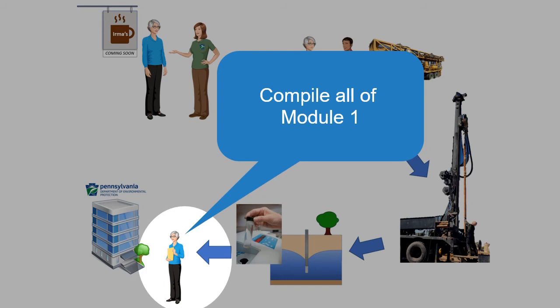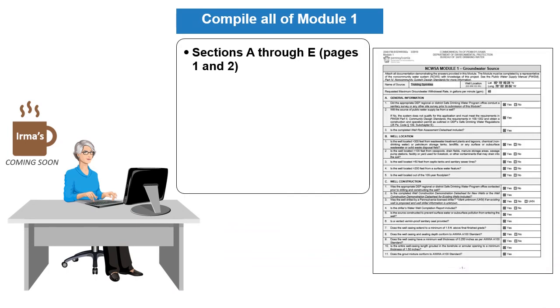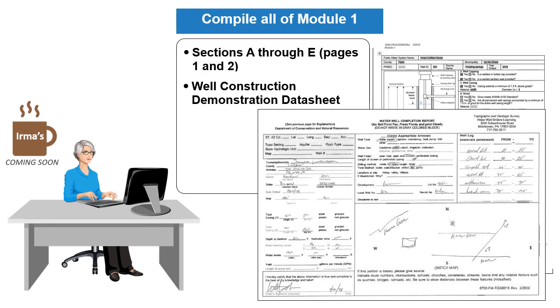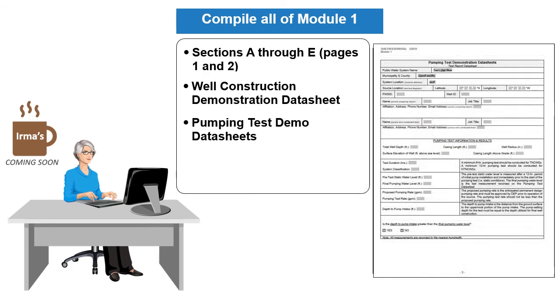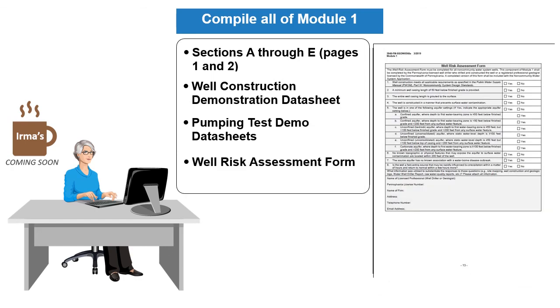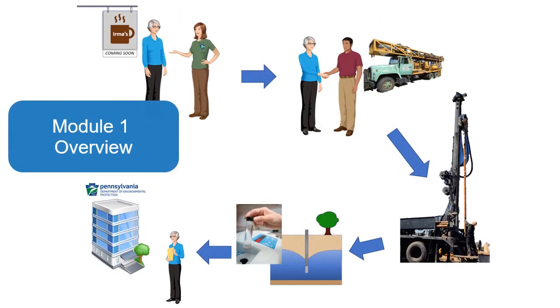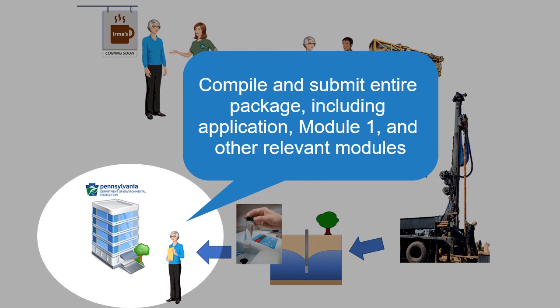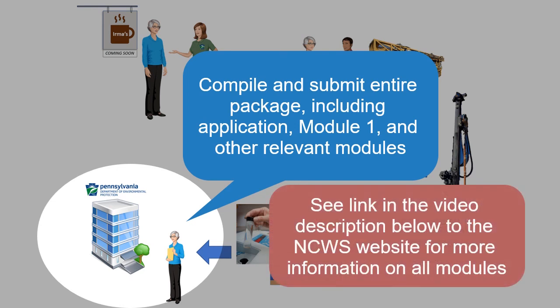Now the applicant can compile all the Module 1 required forms and data sheets. These include Module 1 Sections A through E, pages 1 and 2 of the application; well construction demonstration data sheet for new wells, which also requires a copy of the Driller's Water Well Completion Report; pumping test demonstration data sheets; and the well risk assessment form. Remember Module 1 is only one component of the non-community water system application package. You will need to compile the entire package including the application, Module 1 and any other relevant modules. Please view the other tutorials on this channel for more information on the process and the other modules.